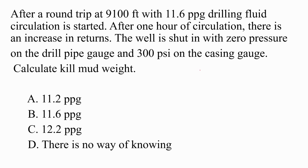The question gives us the TBD and the mud density. After a round trip they started circulation, and after an hour of circulation there was an increase in returns and the well was shut in. The drill pipe pressure reads zero and the casing reads 300 psi. We need to calculate the kill mud density from four different options. We need to understand what happens when a kick occurs after one hour of circulation following a round trip.